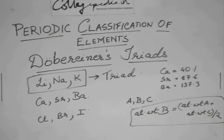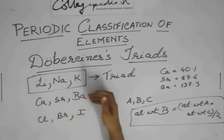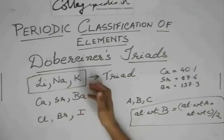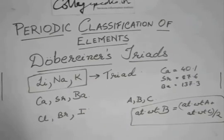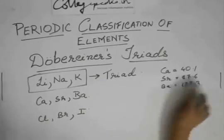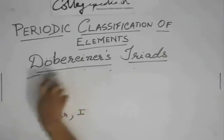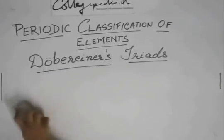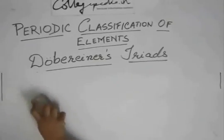But the disadvantage was that he could find only three such triads. There were more elements discovered at that time than these three, and now there are even more. So he could find only three such triads, so it was not of much use, although it was the beginning of the classification of elements.